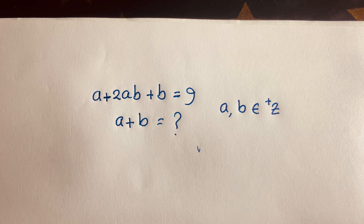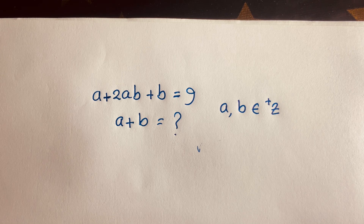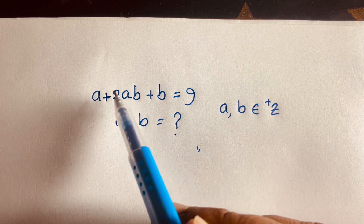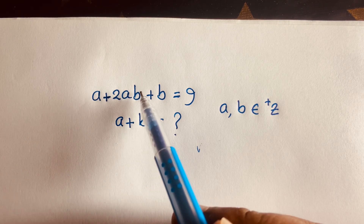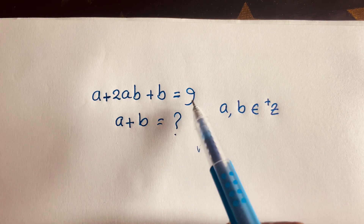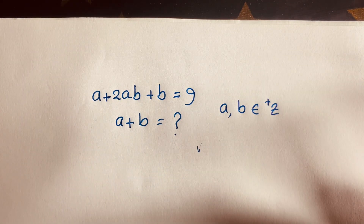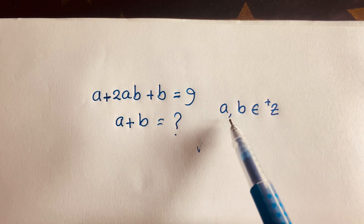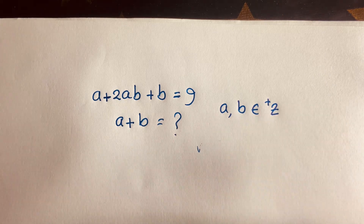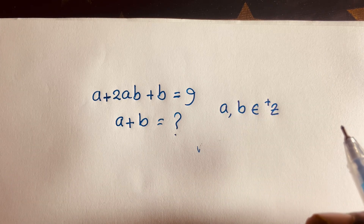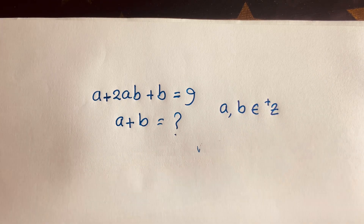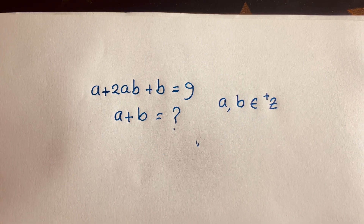Hello everyone. In this video we have solved this math olympiad equation: a plus 2ab plus b is equal to 9. Find a plus b, where a and b are positive integers.